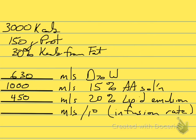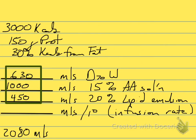So 630 mL of D70 coming in — that's our third volume for the prescription. If I add all three volumes together — 1,000 mL amino acid, 450 mL lipid, and 630 mL D70 — I end up with a total volume of 2,080 mL. Dividing by 24 hours gives me an infusion rate of 87 mL per hour.